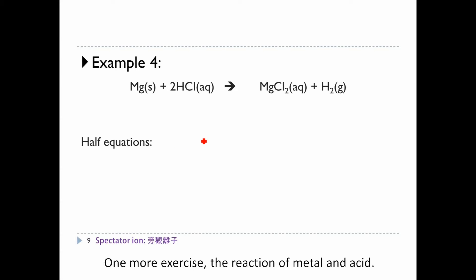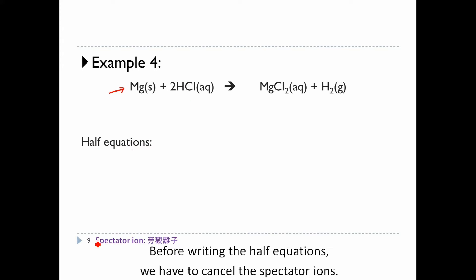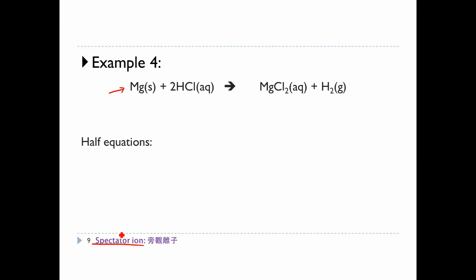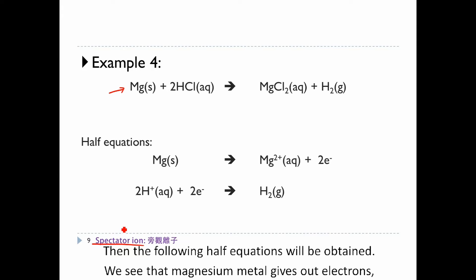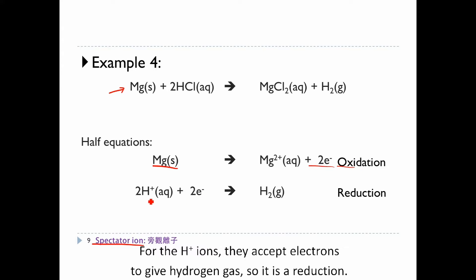One more exercise: the reaction of a metal and acid. This time we have the full equation of the reaction. Before writing the half equations, we have to cancel the spectator ions. Then the following half equations are obtained. We see that magnesium metal gives out electrons, so it is an oxidation. For the H+ ions, they accept electrons to give hydrogen gas, so it is a reduction.